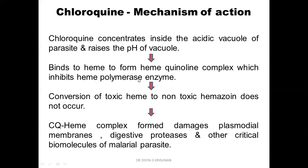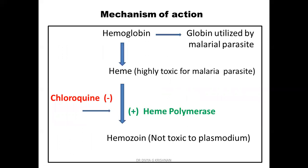When heme polymerase is inhibited, the conversion of toxic heme to non-toxic hemozoin does not occur. The chloroquine-heme complex that is formed damages the Plasmodium membranes, digestive proteases, and other critical biomolecules of the malarial parasite, leading to killing of the parasite. In summary: normally hemoglobin is split into heme and globin; globin is utilized for nutrition; heme is converted to hemozoin by heme polymerase. In the presence of chloroquine, heme polymerase is inhibited and the chloroquine-heme complex damages the parasite.